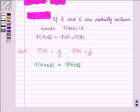And we know that the probability of A union B is probability of A plus probability of B if A and B are mutually exclusive. Now probability of A is 3 by 5 and probability of B is 1 by 5. So probability of A or B is 4 by 5.